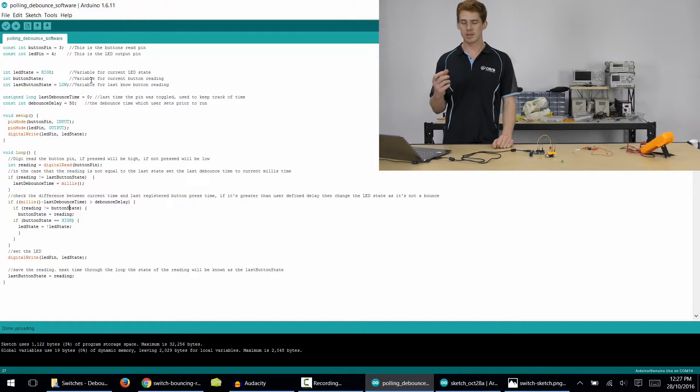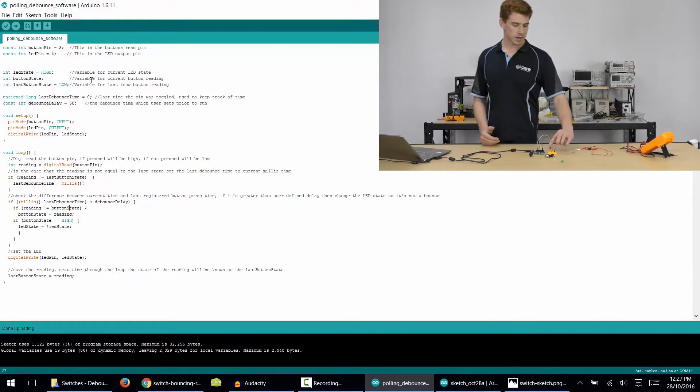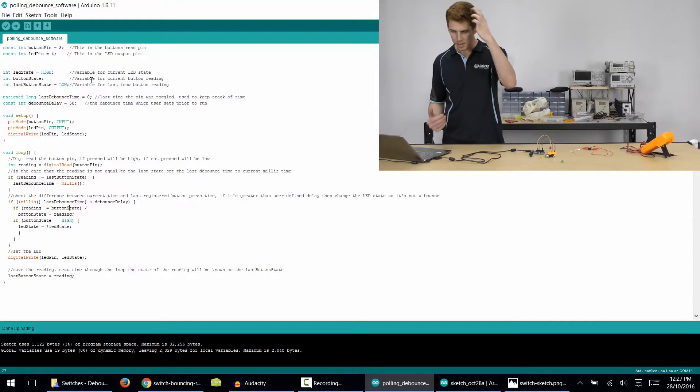Now we're going to have the LED state, and that is the level of the pin that is attached to the LED here. We're also going to have the button state currently and the last time the button was pressed what the state was.